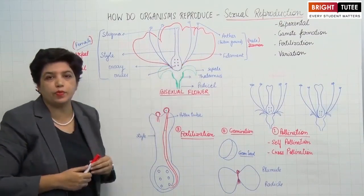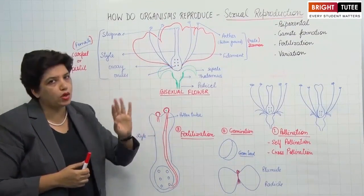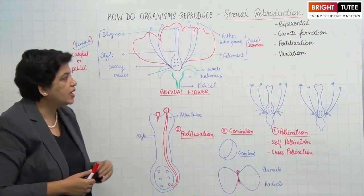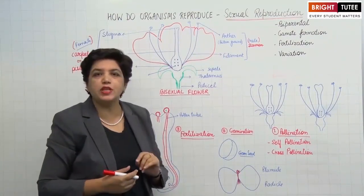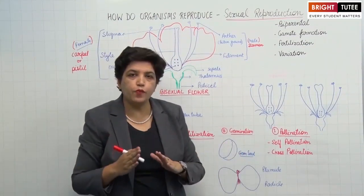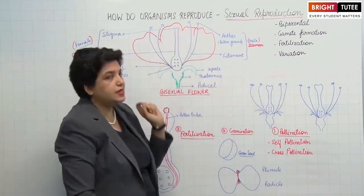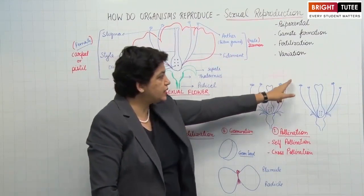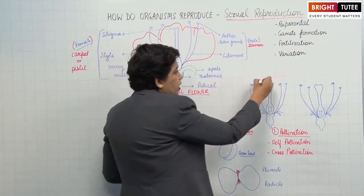This is the structure of a bisexual flower — it has both the female and the male reproductive organs. If a flower contains only one, either male or female reproductive part, then it is called a unisexual flower. The first step in sexual reproduction is pollination — the transfer of pollen grains from the anther to the stigma, that is from the male reproductive part to the female reproductive part.